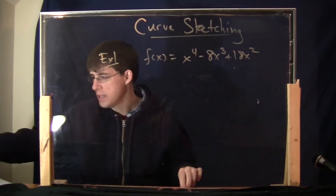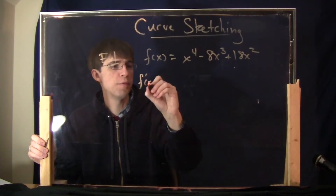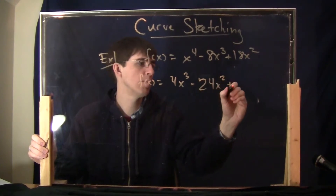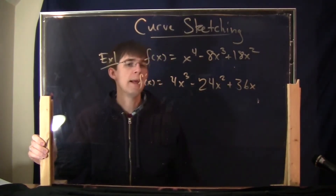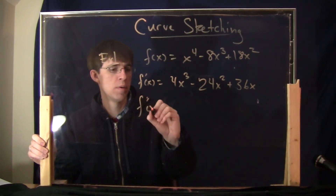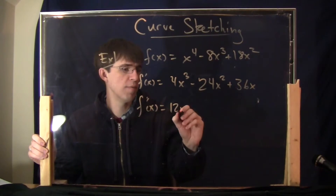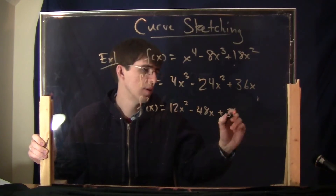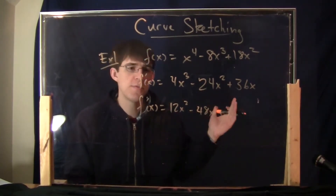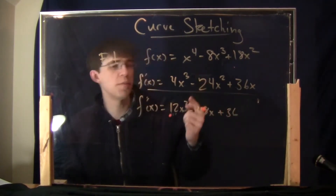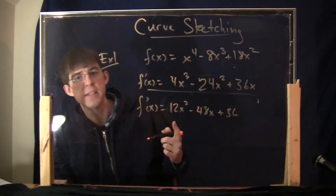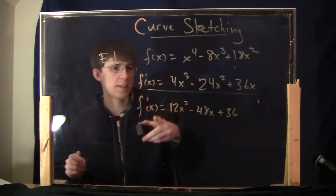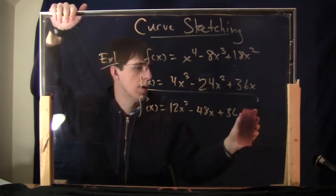Because I want the critical numbers and the inflection points, we're going to have to take the derivative. The first derivative is 4x cubed minus 24x squared plus 36x. I'm going to take the second derivative also — we're going to use this for the inflection points. That would be 12x squared minus 48x plus 36. You've got to save this stuff; we're going to use all three of these functions throughout the whole problem.